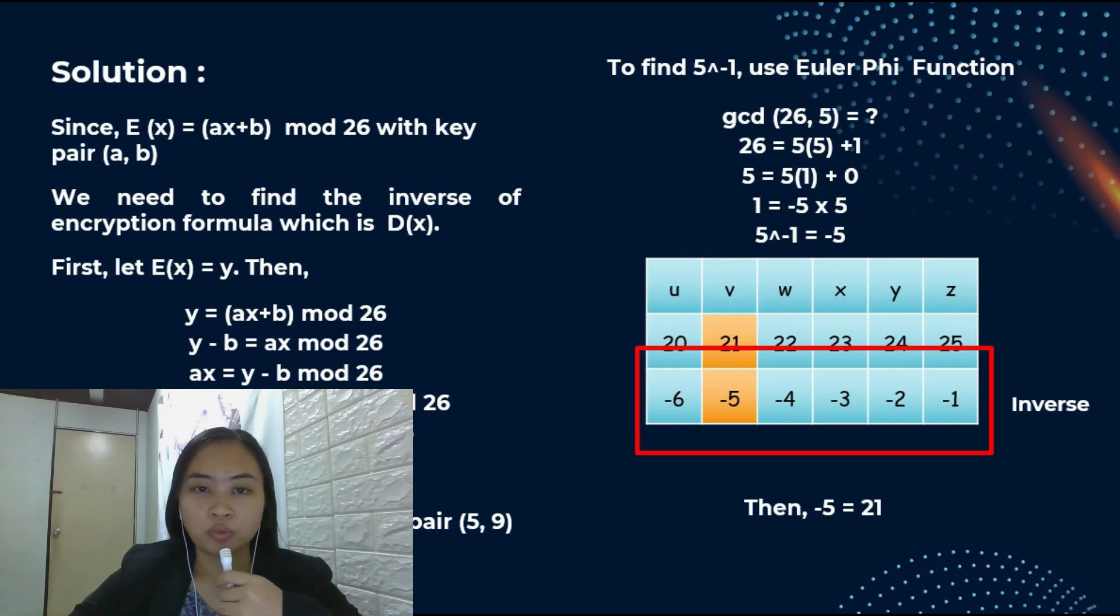To find 5 inverse, we use Euler Phi function where we find the GCD of 26 and 5. Using the equation of GCD, 26 equals to 5 times 5 plus 1. 5 equals to 5 times 1 plus 0. So, we get GCD equals to 1. Next, 1 equals to negative 5 times 5. Therefore, 5 inverse equals to negative 5. By referring to the standard values, we also can find its inverse by starting from Z, that is negative 1 and so on. So, in the inverse row, negative 5 will be equal with 21. Then, we substitute 21 in 5 inverse in the new equation we obtained earlier.